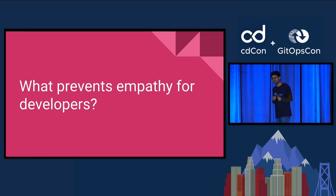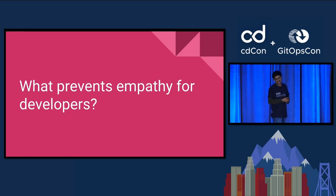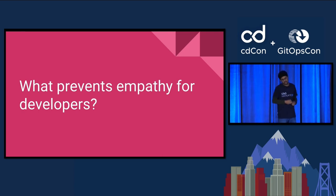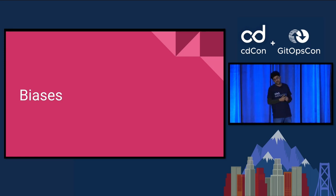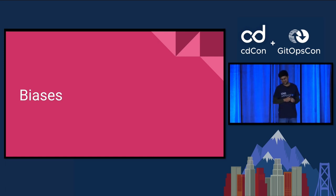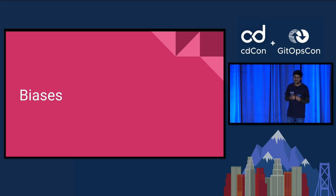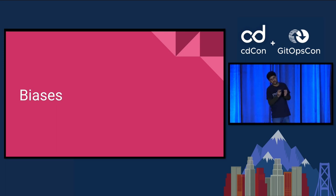The second is the curse of knowledge — the tendency to assume that others know what we know. Developers who suffer from it may assume users have the same level of expertise, leading to products that are difficult to understand and use. Third is hindsight bias: believing events were more predictable after they've occurred — developers may believe user feedback was obvious in retrospect, even if they didn't consider it during development. Fourth is availability bias: relying on readily available information rather than seeking comprehensive feedback — developers may rely on a smaller group of users and ignore harder-to-obtain feedback.